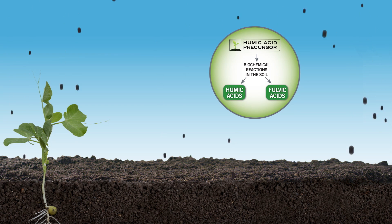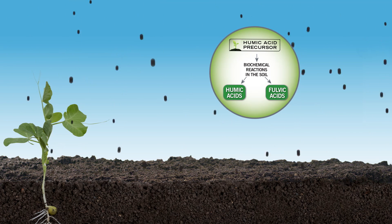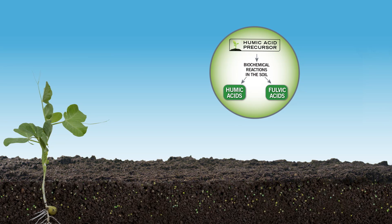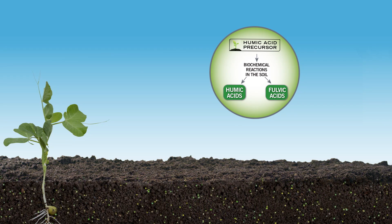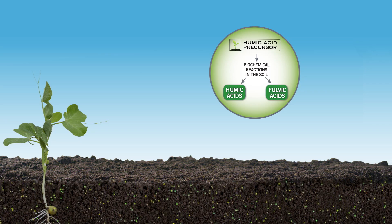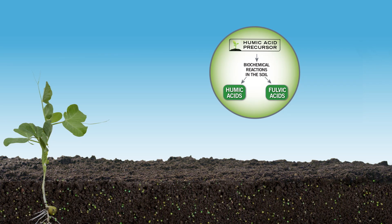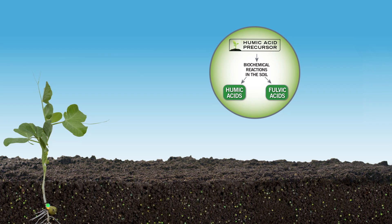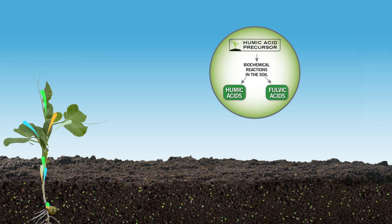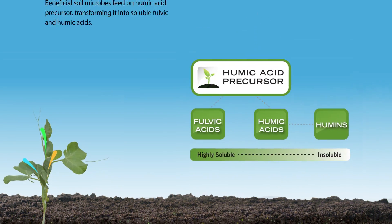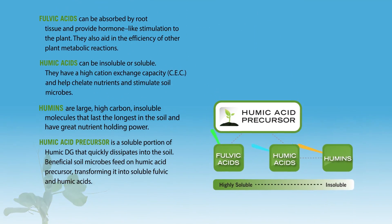Upon dispersion, the humic acid precursor is transformed through soil biochemical reactions into readily available forms of humic and fulvic acids. This helps to chelate nutrients in the soil, enhancing uptake of applied fertilizers and nutrients.